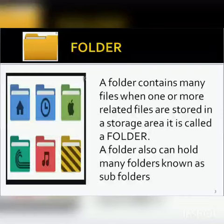Folder. A folder contains many files. When one or more related files are stored in a storage area, it is called a folder. That means a folder is a container in which you can store files. For example, if you put thousands of paper files on someone's desk, it would be impossible to find any particular one when you needed it. That's why people often store paper files in folders inside a filing cabinet. Arranging files into logical groups makes it easy to find any particular file. A folder also can hold many folders, known as subfolders.